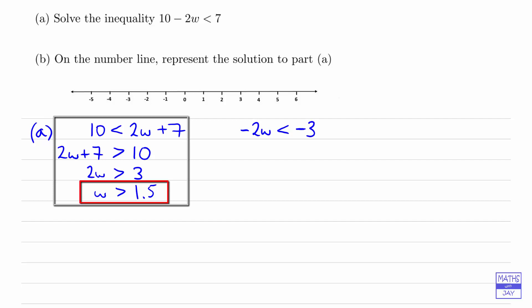And then we would need to divide both sides by negative 2. Now this is where you need to be careful, because when you multiply or divide an inequality by a negative, you need to change the direction of the inequality. Let's just have a look at why that is.